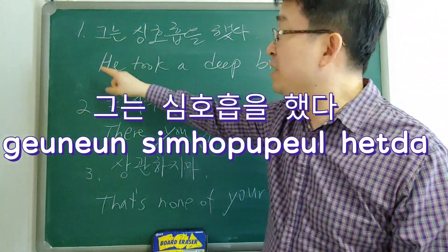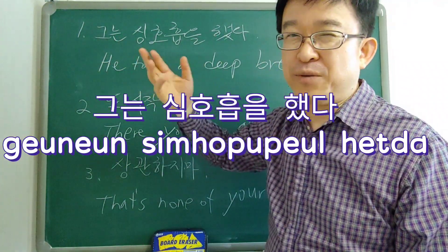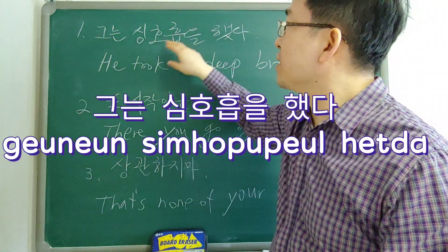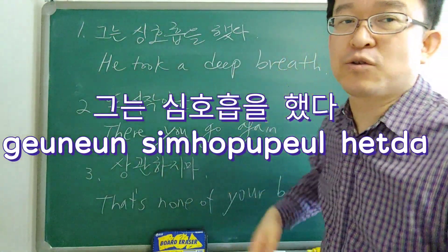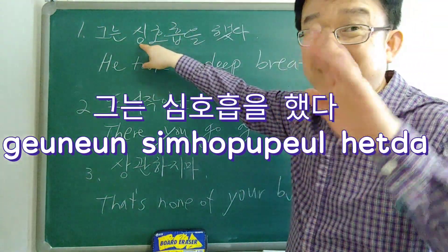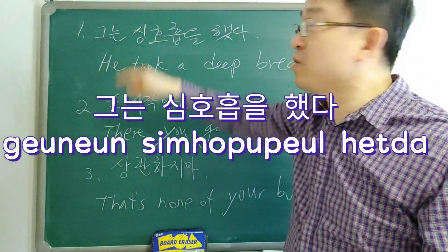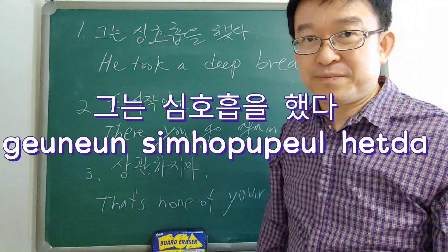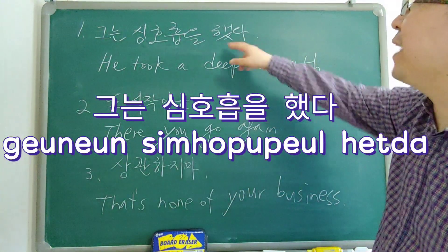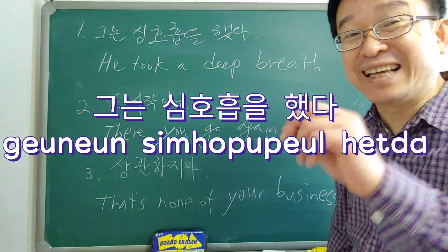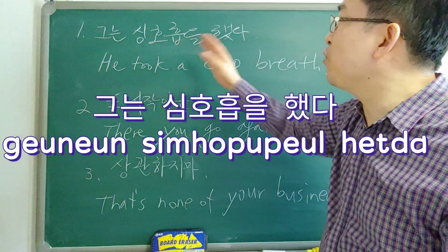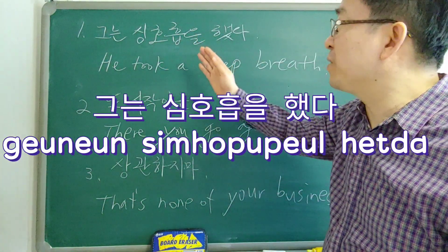그는 means 'he.' 심호흡을 means deep breath — like taking a deep breath. 했다 means 'did,' as in did something. So, 그는 심호흡을 했다. 그는 심호흡을 했다.